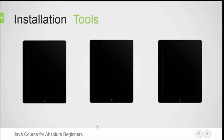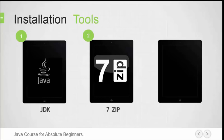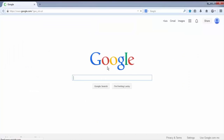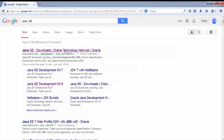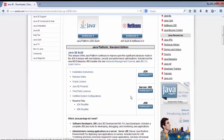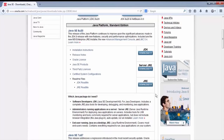In this section you will download and install the tools needed to start programming in Java — all free. First, download and install the latest version of JDK directly from the Oracle website. Second, install 7-Zip, a tool that allows you to decompress files of different formats like zip, rar, gzip, and others. Third, download Eclipse, a platform that allows you to create Java programs easily. Go to Google and search for Java JDK, open the Oracle Java SE link, find the JDK download link, and click it. Accept the license, then select the version according to your operating system — Windows 32 or 64 bits, Linux, Mac, etc.